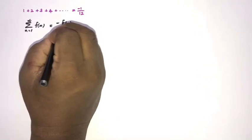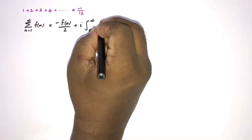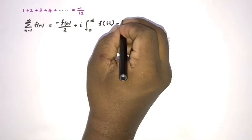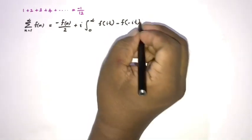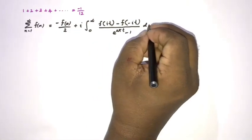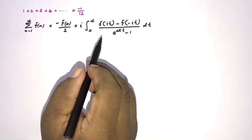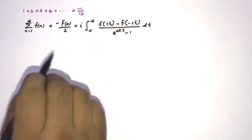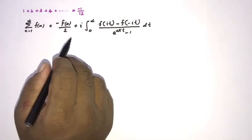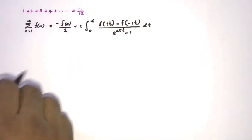The Ramanujan summation formula is: the sum of n equals 1 to infinity of f(n) is equal to minus f(0) over 2, plus i times the integral from 0 to infinity of [f(it) minus f(-it)] over (e^(2πt) - 1) dt. This is the Ramanujan summation of a divergent series. This formula is used for non-convergent infinite series, so we can apply it to find the sum of this series.